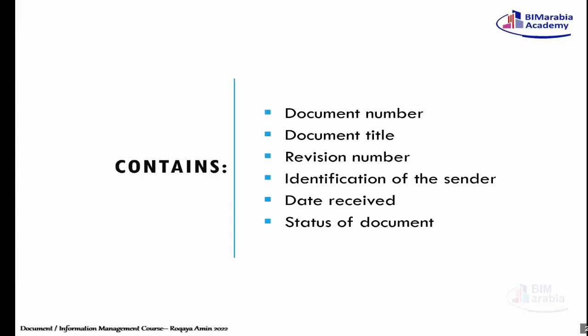The third thing is the revision number. It is important that the register shows which revision you are working on — for example, revision 3 — so you are not seeing an older revision 2 on the server. The fourth thing is the identification of the sender, which must be written by name in the document registration.